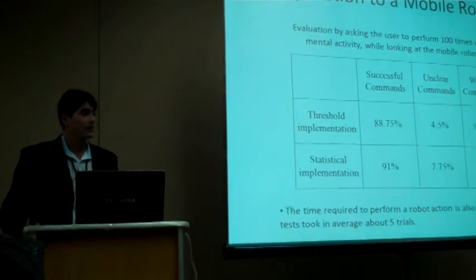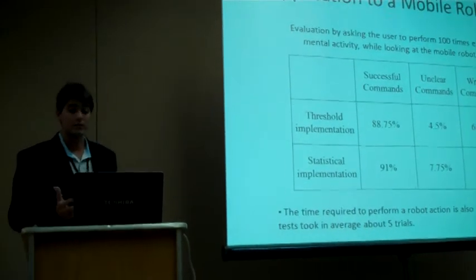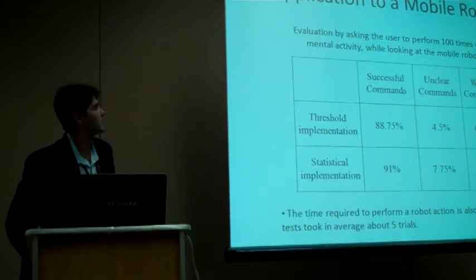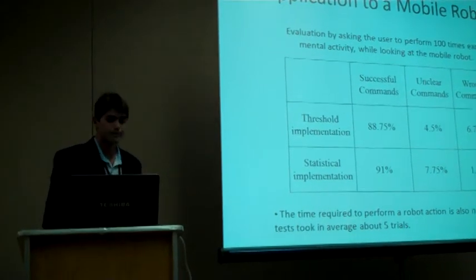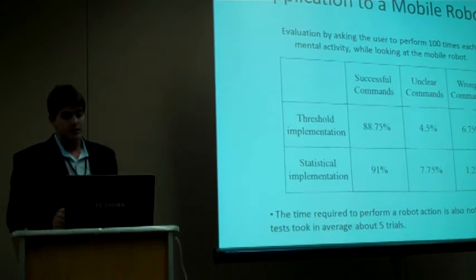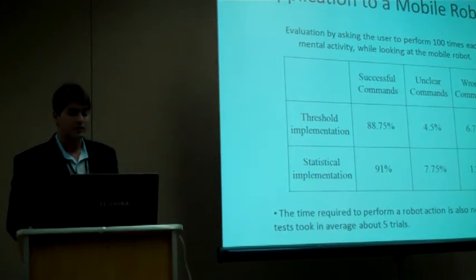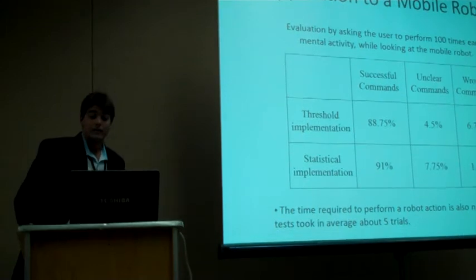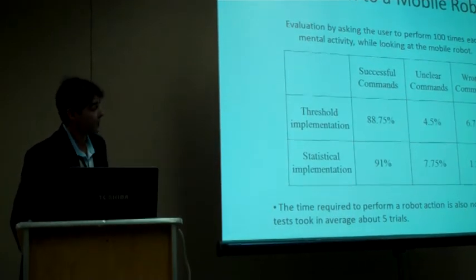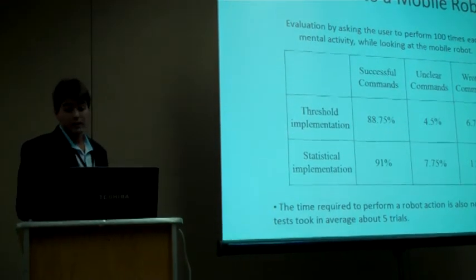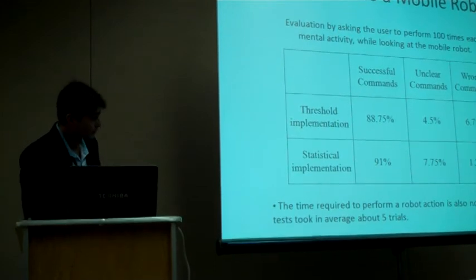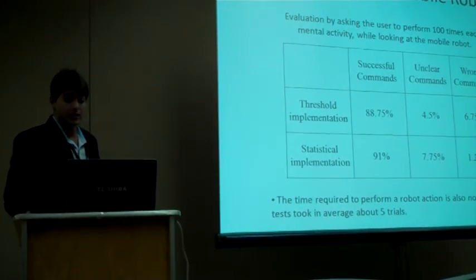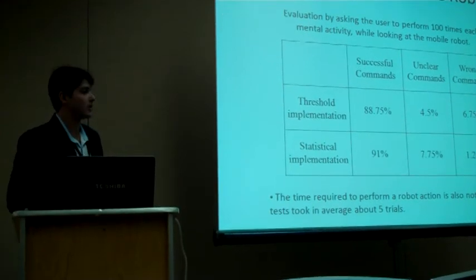The evaluation of the whole system was made asking the user to perform 100 times each mental activity while looking at the robot. And you can see that the statistical implementation reaches a higher number of successful commands of 91%. It's important to see that the wrong commands is only 1.55% during the concept of unclear commands.